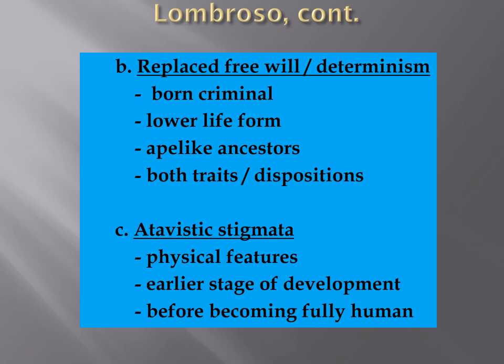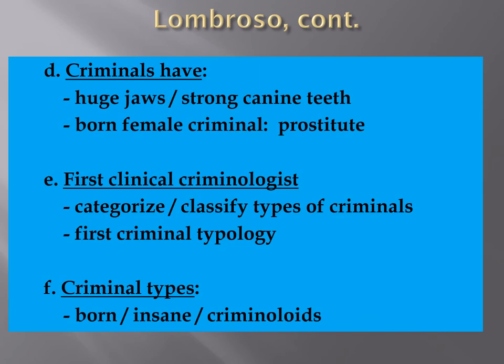Lombroso also looked at atavistic stigmata — physical features representing an earlier stage of development. What he was really trying to do was prove that people who were criminals are somehow less evolved than non-criminals. He looked at physical characteristics like huge jaws and strong canine teeth. He identified a 'born female criminal,' otherwise known as the prostitute. He was the first to introduce clinical criminology — categorizing and classifying different types of criminals — and created a criminal typology with types like born criminals, insane criminals, and crimineloids.